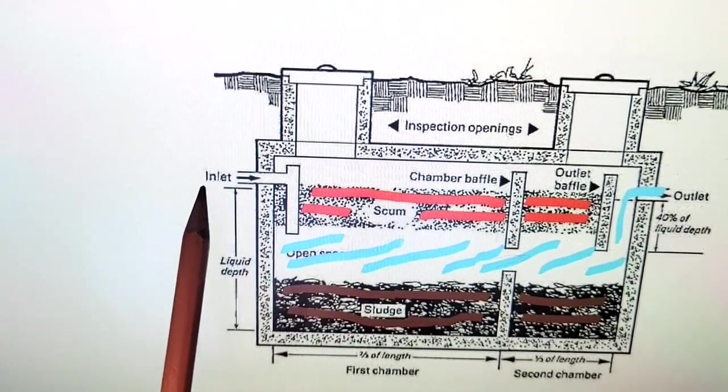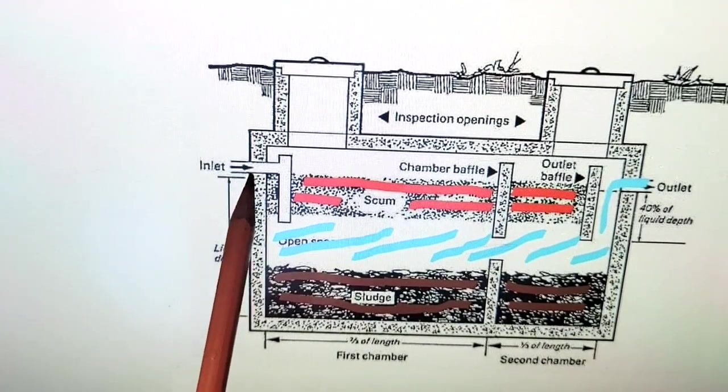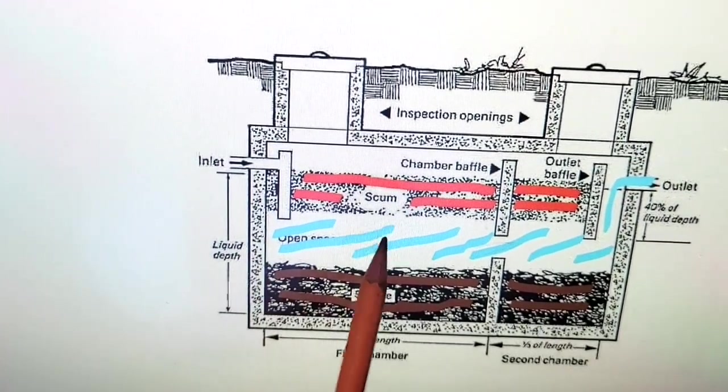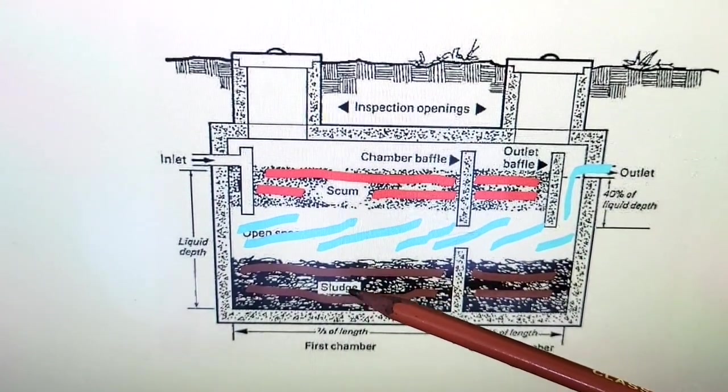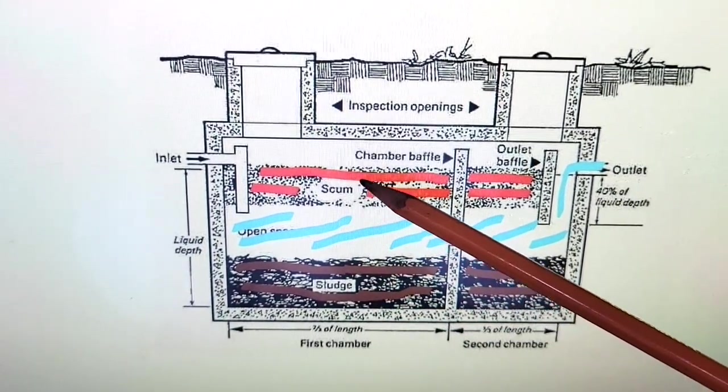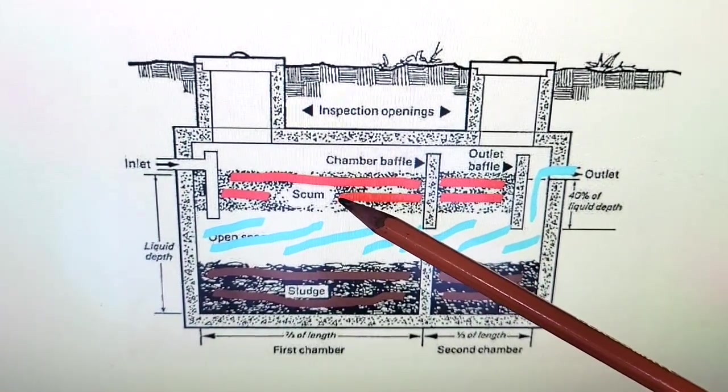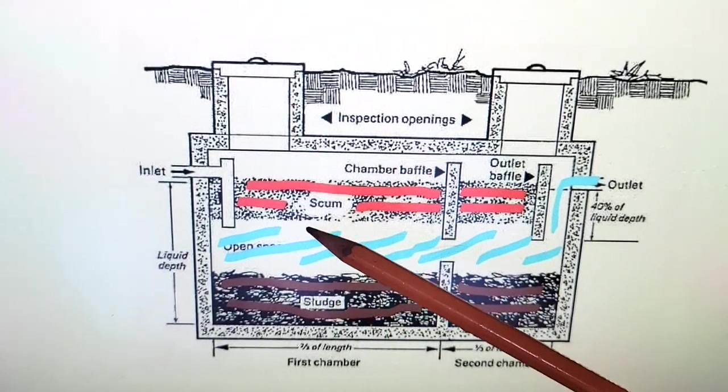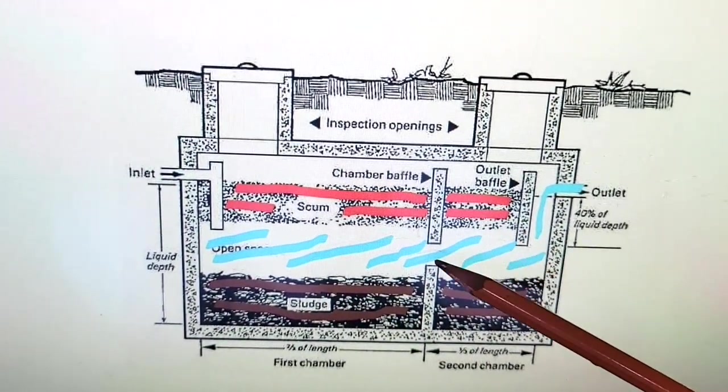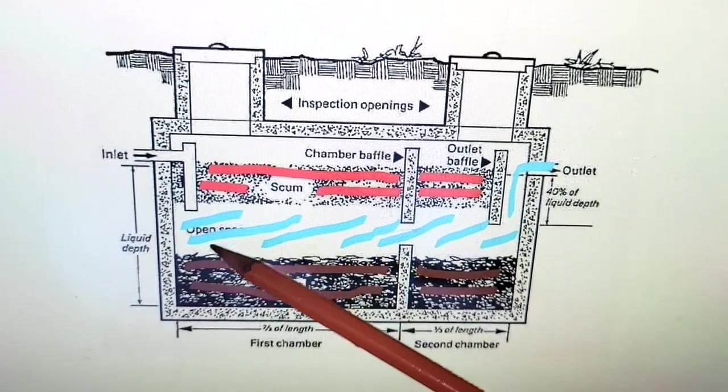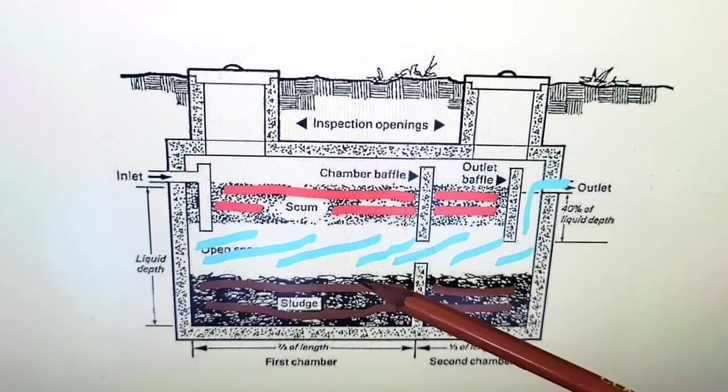The way it works is simple. The sewage comes out of your house through this pipe and pours into this first chamber over a period of time. The sludge, the heavy stuff, sinks to the bottom. Light stuff, grease and soap and foamy stuff goes to the top. That's called scum. So you have sludge and you have scum. In the middle, you have fairly clear water. This is the clear water that the bacteria have been working on and they've actually cleaned it up pretty well. It's not drinkable, but it's actually pretty clear, pretty clean water.